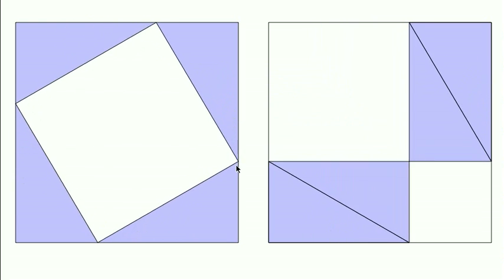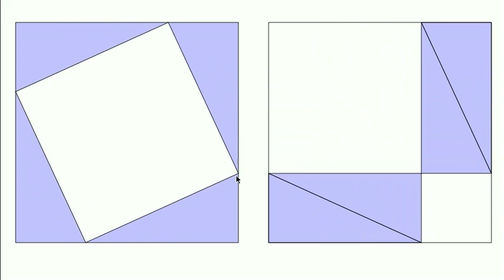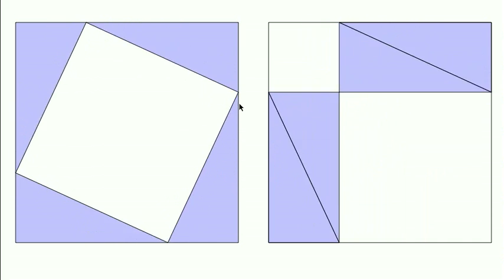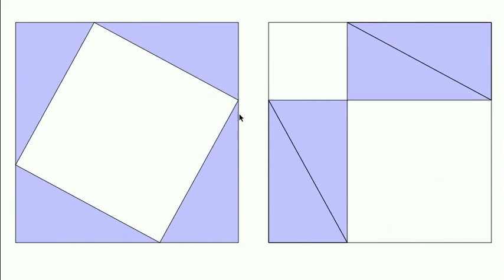And it becomes more obvious, I think, when you see how the four triangles are always the same on both sides. Four copies of the same triangle. And the big square is always the same.